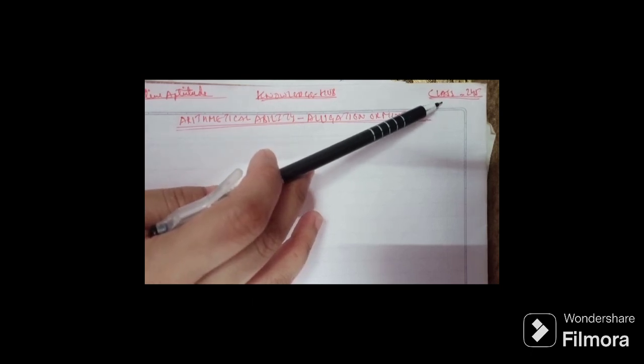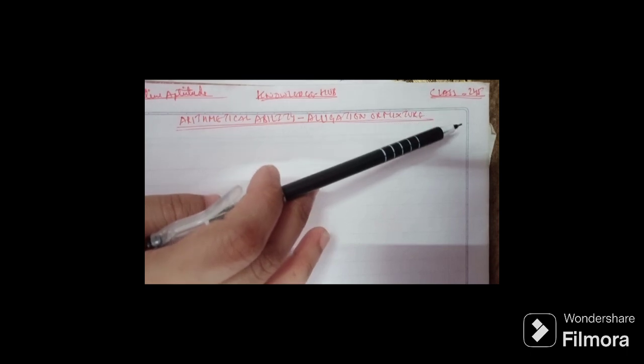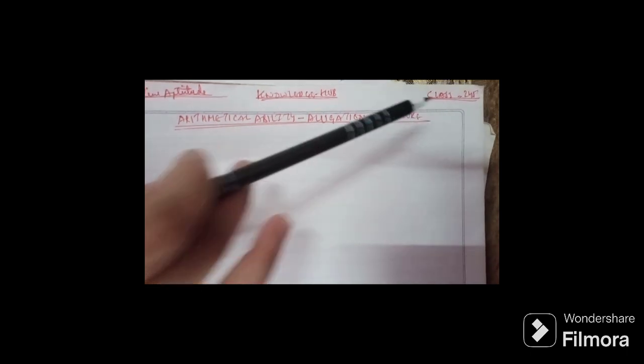Continuing with the same topic, we had done the 8th question in the previous class on mathematical ability, that is alligation or mixture. If you have not seen it, you can go ahead and find the videos and lectures with each and every question that we had done.